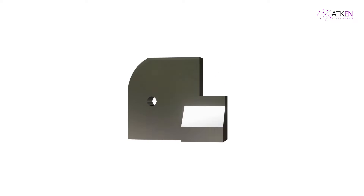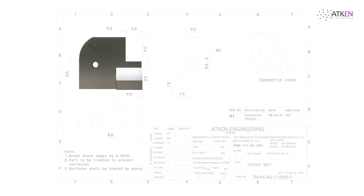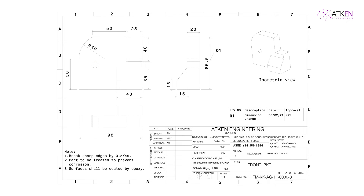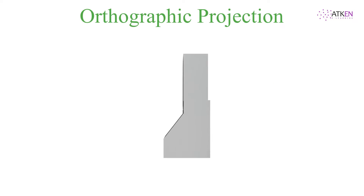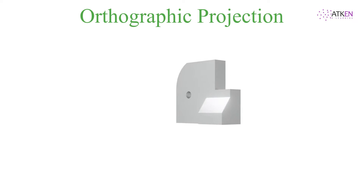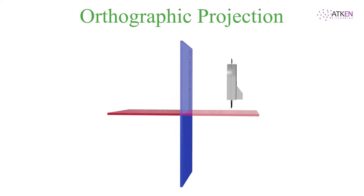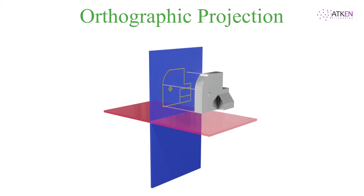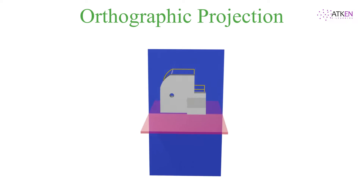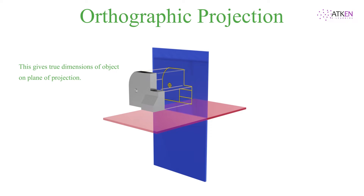Parts exist in three dimensions, but an engineering drawing depicted on a piece of paper has only two dimensions: length and width. Orthographic projection helps to translate three-dimensional objects onto a two-dimensional plane. In orthographic projection, visual rays coming from the object are oriented at right angles to the projection plane, giving true dimensions of the object on the plane of projection.